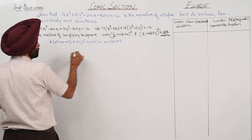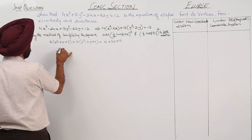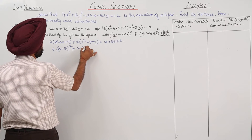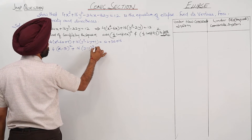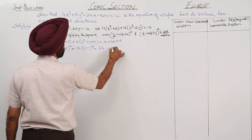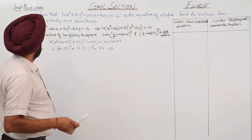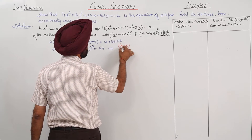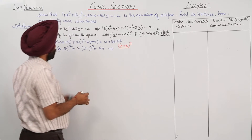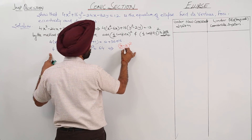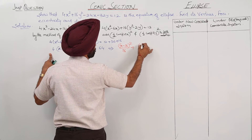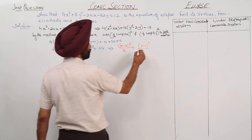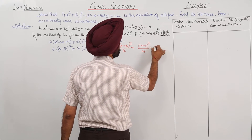So this becomes 4(x − 3)² + 16(y − 1)² = 64. Now dividing each term by 64, we get (x − 3)²/16 + (y − 1)²/4 = 1.